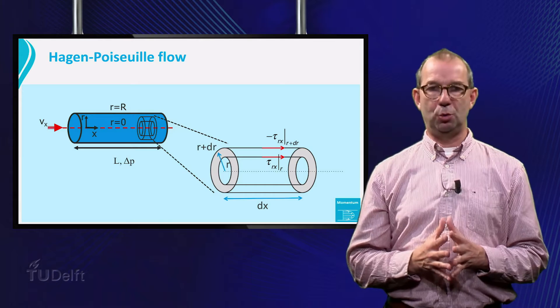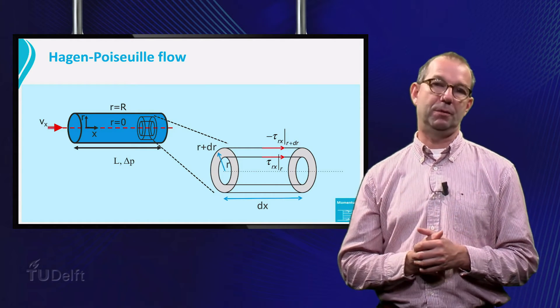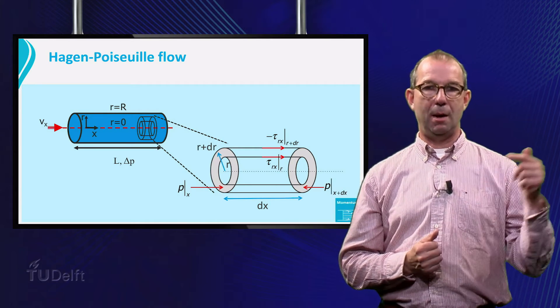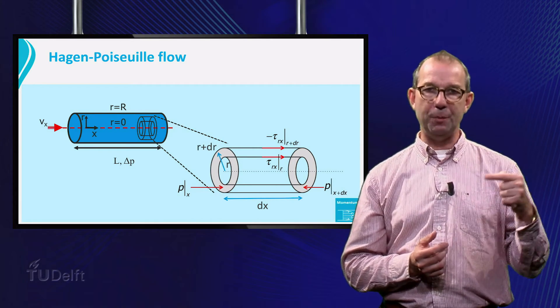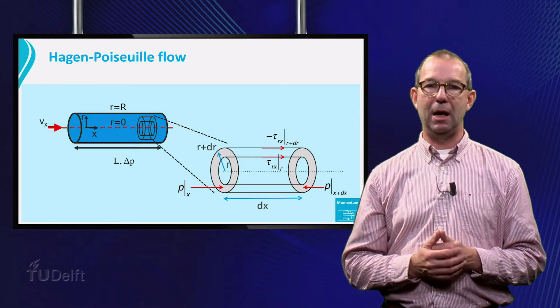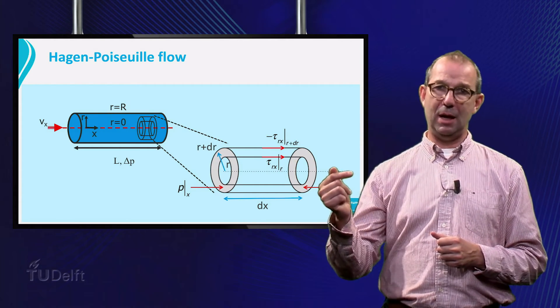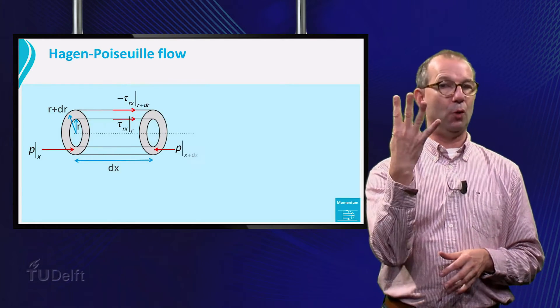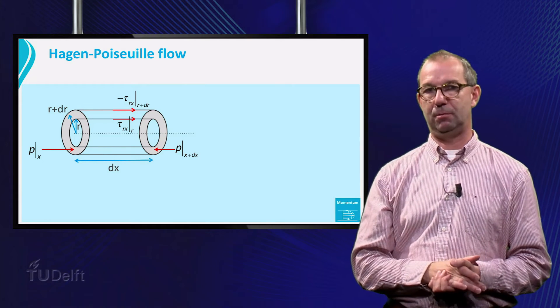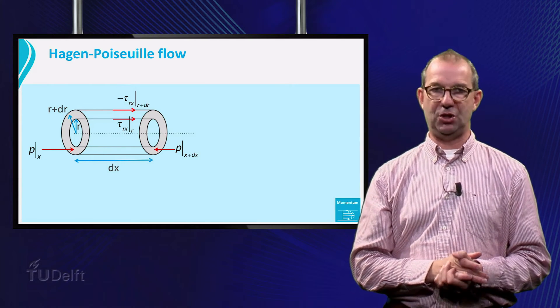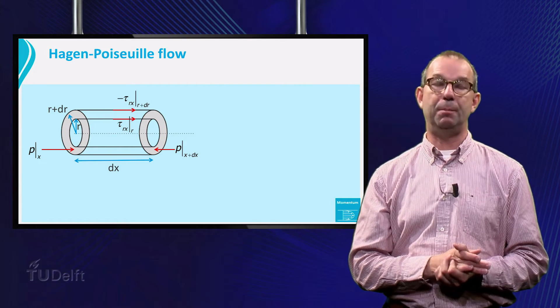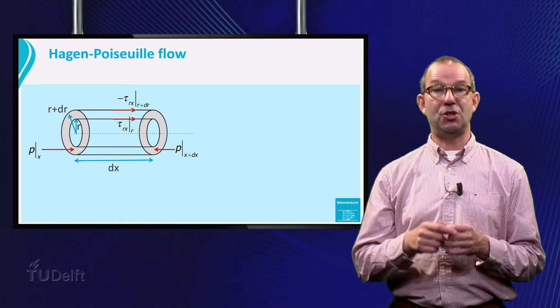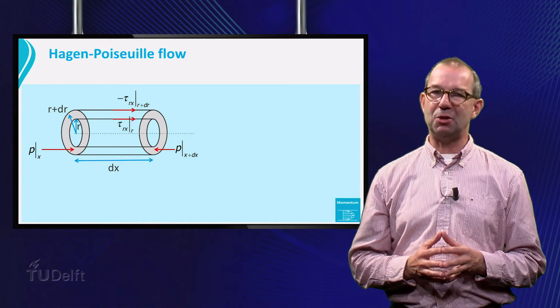First we draw in the two shear stresses. Note again the sign convention. Next the pressure force. P at position x is pushing from the outside on the grey area. And P at x plus dx is pushing at the other side in the opposite direction. These four forces must balance. Of course, both pressure and shear stress need to be multiplied by the area on which they act to get the forces. Since this is a cylindrical geometry, the areas need some attention.